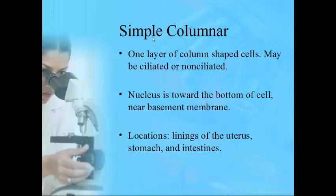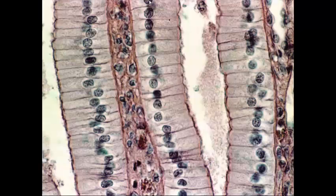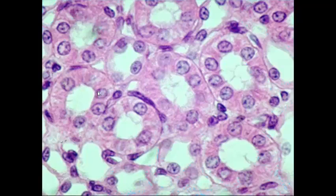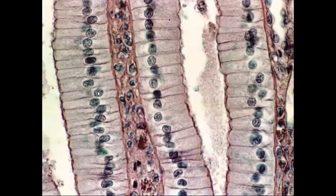Simple columnar tissue — one layer, column-shaped cells — may or may not have cilia depending on where it's found. The nucleus is almost always found at the bottom of the cell, toward the basement membrane. You'll find this tissue in the intestines, stomach, and lining of the uterus. On a slide, the dark nuclei line up in a nearly straight line with the basement membrane below — one layer of column-shaped cells.